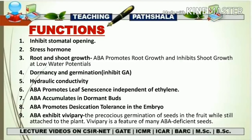The last function of ABA is its role in vivipary — precocious germination of a seed in the fruit while still attached to a plant. Vivipary is a feature of many ABA-deficient seeds. This means a particular seed germinates while still attached to the parent plant. A real-life example is when you cut a tomato and find a tiny plant already generated from the seeds inside — that is vivipary or precocious germination, and it mainly happens when there is a deficiency of abscisic acid.